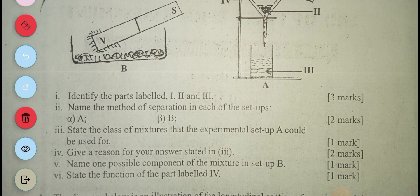Then IV: give a reason for your answer stated in III. The answer you give, why is your reason. The next one is name one possible component of the mixture in setup B, and VI: state the function of the part labeled IV.